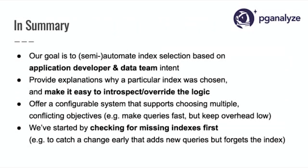In summary, our goal is to semi-automate index selection based on application developer and data team intent. We could also fully automate this — there's no problem with actually creating those indexes automatically; it's just a question of whether you want that. We want to be able to explain why an index was chosen, and give you a way to override or introspect it. We want this to be configurable — not a magic AI black box, but a predictable algorithm you can reason about and understand. Right now we focus on checking for missing indexes, but as Philippe mentioned, there are other things we could do like index consolidation.